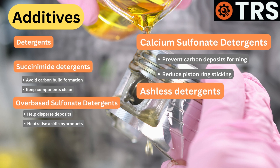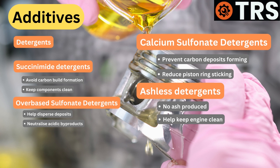Ashless detergents are another type used. These do not produce ash as a by-product of combustion, and are therefore known as ashless detergents. They aid in keeping the engine clean, and are crucial for engines that have exhaust catalytic converters.